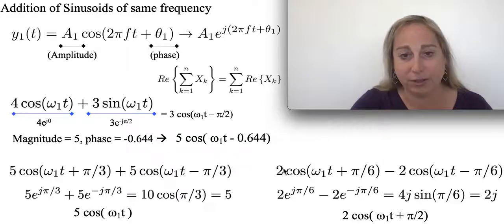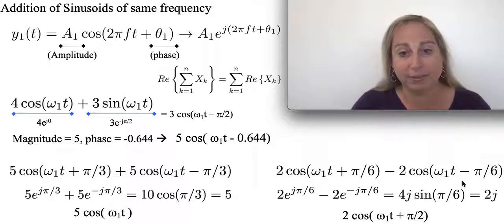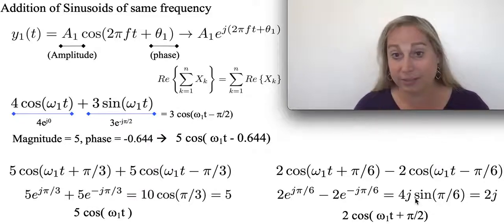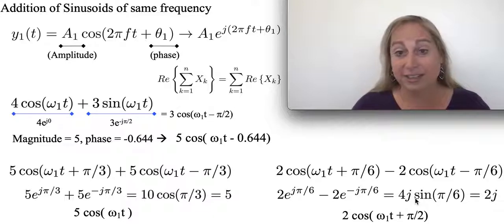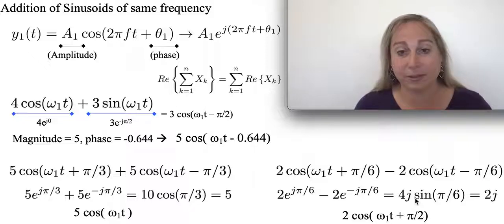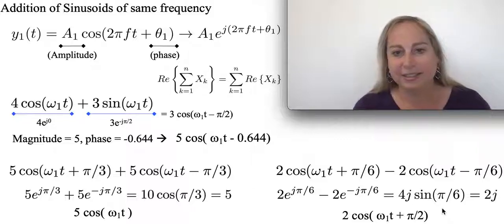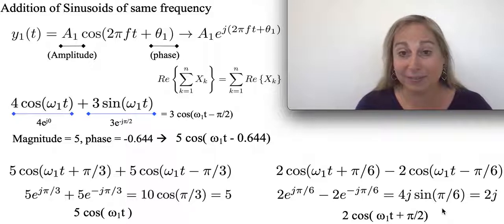Do a similar thing with 2cos(ω₁t + π/6) - 2cos(ω₁t - π/6). What do I get here? If I look at the two of them, I get something that almost looks like a sine. So I get 4j sine, because remember it's 2j for the sine, sine of π/6, and it gives me 2j. It's a positive phase shift at that point, so it gives me 2 cosine ω₁t plus π/2, which is basically a lagging phase shift by π/2.